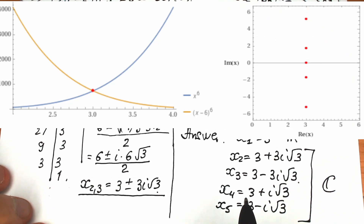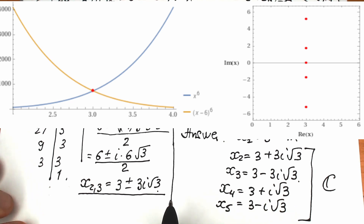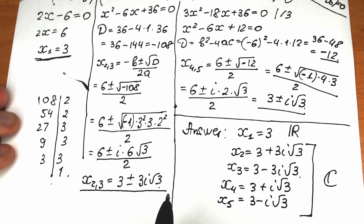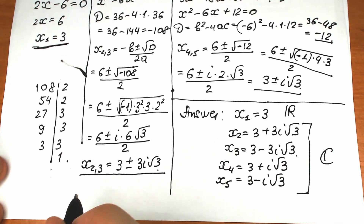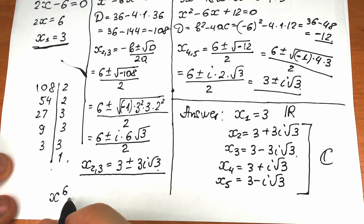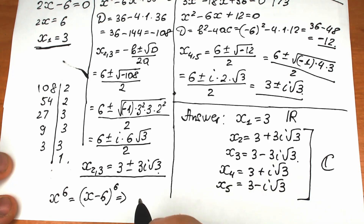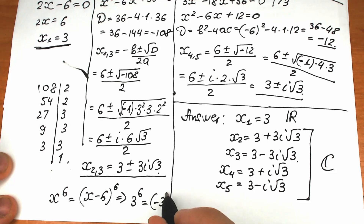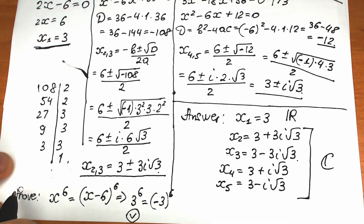We can also see this in a graph and on the complex plane from a geometric perspective. To verify x₁: plugging in three into the original equation, three to the sixth power equals three minus six, which is negative three, to the sixth power. Since the power is even, three to the sixth equals three to the sixth. This confirms x₁ equals three is correct.